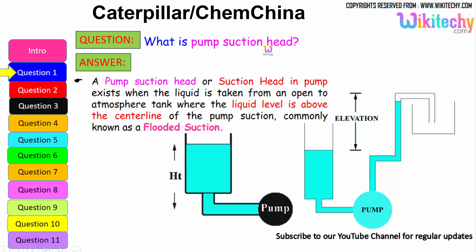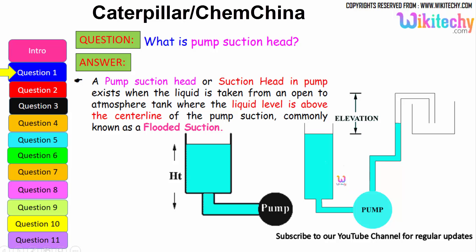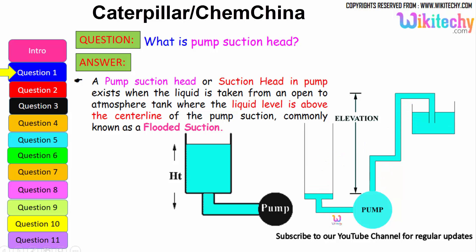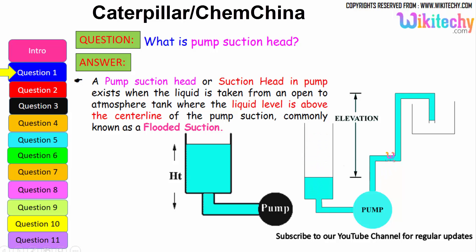What is pump suction head? A pump suction head, or suction head in a pump, exists when the liquid is taken from an open atmospheric tank where the liquid level is above the center line of the pump suction, commonly known as flooded suction. Automatically the pump suction will try to pick the water or any liquid from one area to the other area based on the atmospheric pressure.